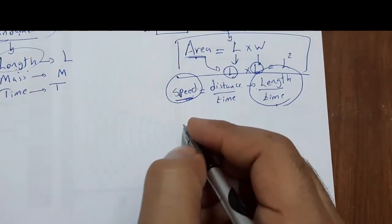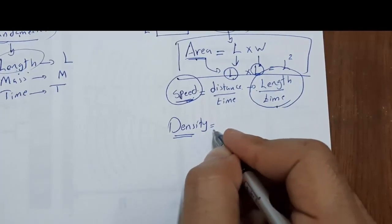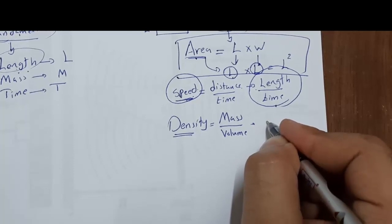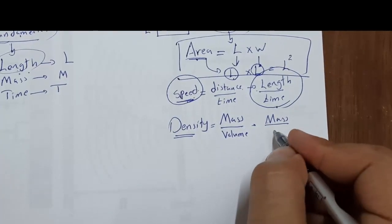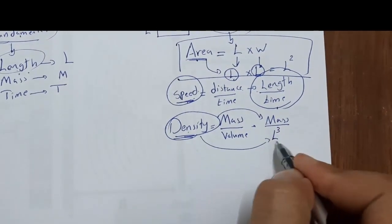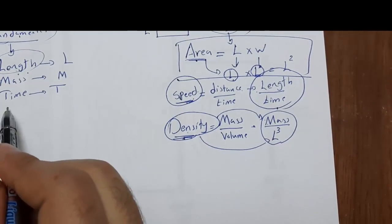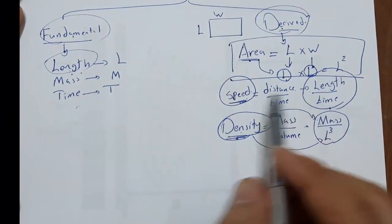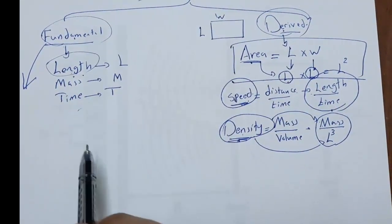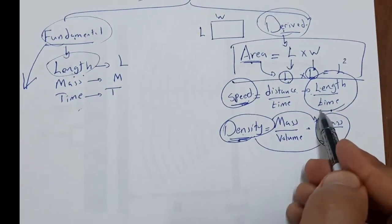Another example: density. Density is a physical quantity, but what is the formula? Density equals mass over volume. Mass is mass, and volume equals length × width × height, so volume is derived from length. Therefore density is derived from mass and length cubed — it is a derived physical quantity. The fundamental physical quantities cannot be defined by another quantity; they are defined by themselves — length, mass, time. The derived physical quantities are derived from the fundamentals, as we saw with speed, density, and area.